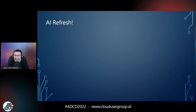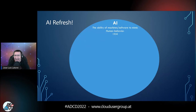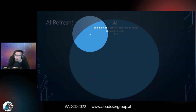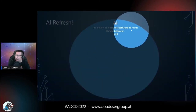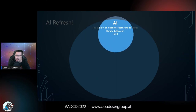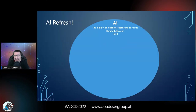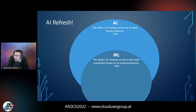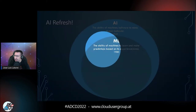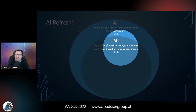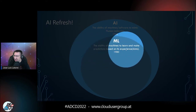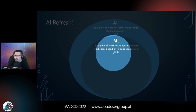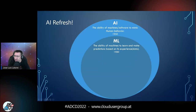First things first — AI. What is AI? AI is the ability of machines and software to mimic human behavior. That started quite early, in 1950, which is when essentially we could start coding. Then comes machine learning a bit later. Machine learning is the ability of machines to learn and make predictions based on its experience — which for computers is data. That trend appeared in 1980, which is pretty cool.